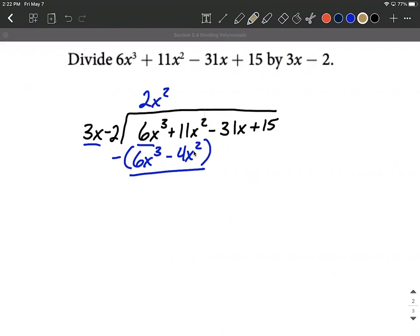But for the second terms there, we want to be a little bit careful. A lot of times I like going off to the side and just doing this as a horizontal subtraction. So we have 11x squared minus negative 4x squared. So you want to be careful this double negative is going to be an addition. So we have 11x squared plus 4x squared is going to be 15x squared.